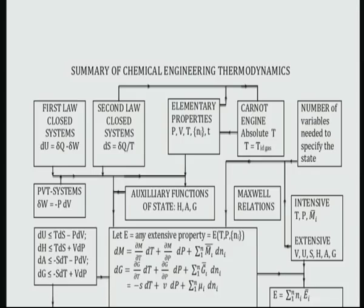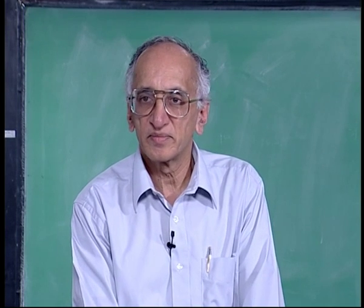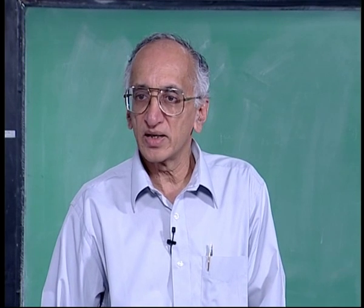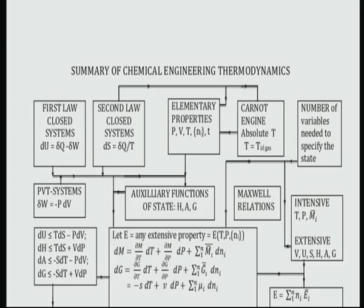So you simply wrote DG is equal to for example minus SDT plus VDP plus mu_i DN_i. Simultaneously you went back to calculus and wrote the other equation for any extensive property. That is DM is partial of M with respect to T DT plus partial of M with respect to P DP plus M_i bar DN_i. One example of that is this.